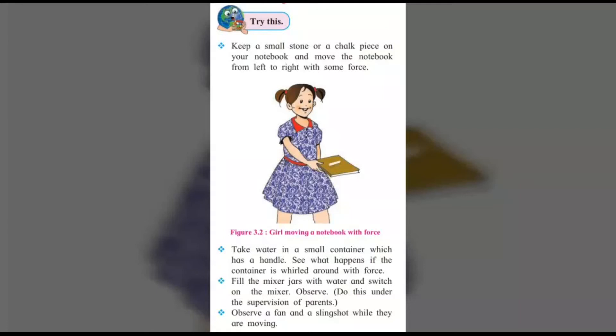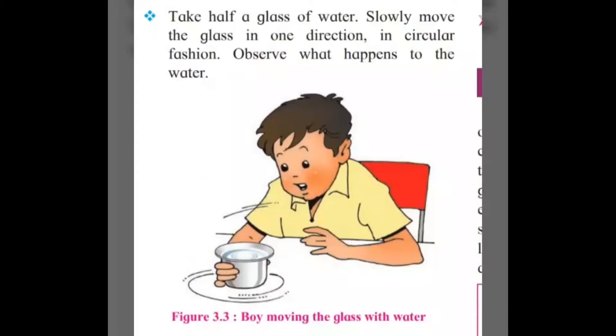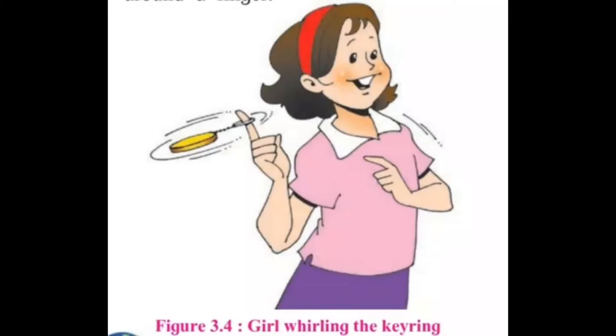Let us try to keep the earth and seawater — try this. Keep a small stone or a chalk piece on your notebook and move the notebook from left to right with some force. Take water in a small container which has a handle and see what happens if the container is whirled around with force. While the mixer — add water and switch on the mixer, observe. Observe a fan and a sling chord while they are moving. Take half a glass of water and slowly move the glass in a circular fashion — observe what happens to the water. Observe what happens if you whirl a key ring around a finger.